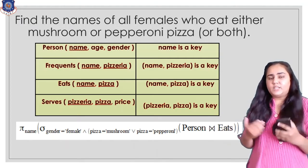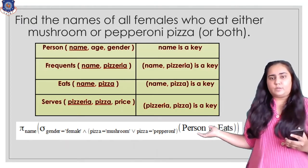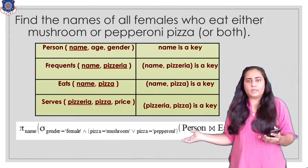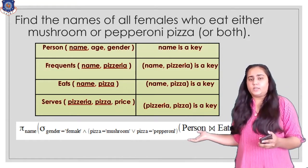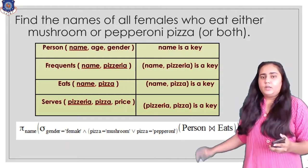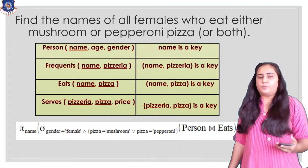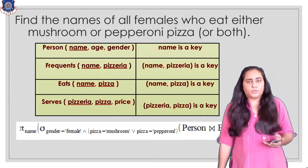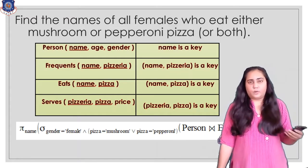From the filtered result, I only need to fetch the name column using a projection by name. Once that is done, you will get all the names of females who eat either mushroom or pepperoni pizza, or both.